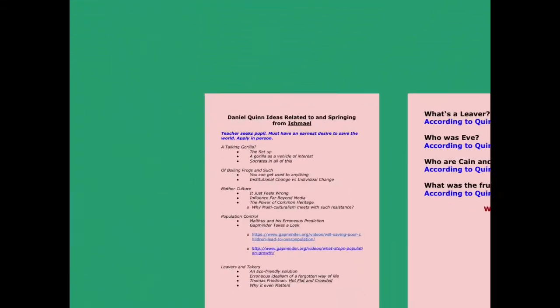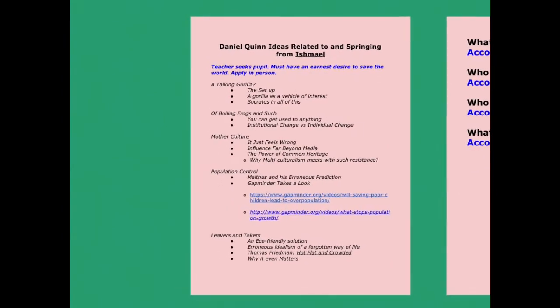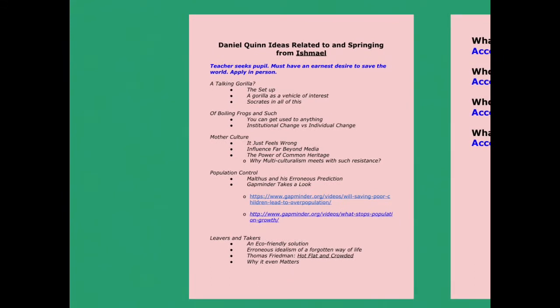So just a little bit about Daniel Quinn and what this idea is. The story is very odd. It begins with an advertisement in a local newspaper that someone is answering. And our narrator of sorts is kind of an out-of-luck guy. He's a highly educated young man, but he's kind of floundering. He doesn't quite know what to do. And he's looking through the want ads, and he finds an advertisement that says, "teacher seeks people must have an earnest desire to save the world. Apply in person." And then there's an address, and the address is kind of in the seedy part of town. But our narrator gets there, and he comes to an abandoned office building. And he notices that the name Ishmael is written on one of the address tags. So he enters, and he finds the office. But the door is open, and the place is a wreck. It looks like it's been abandoned for some time.